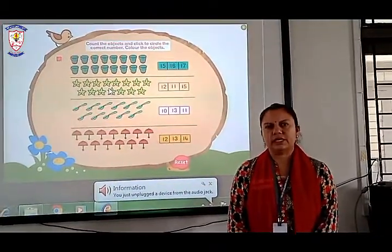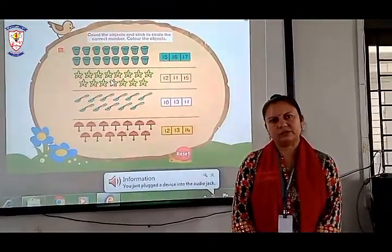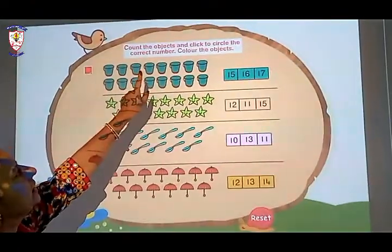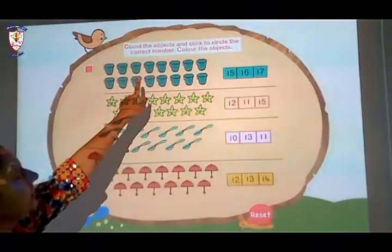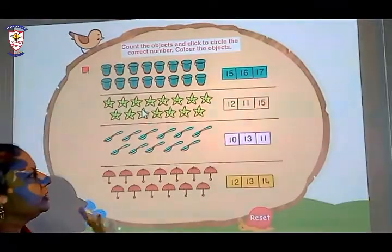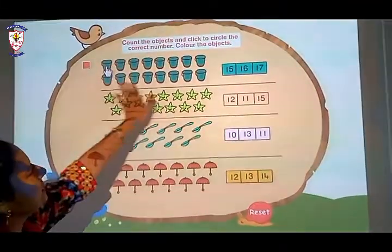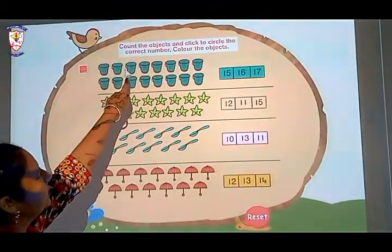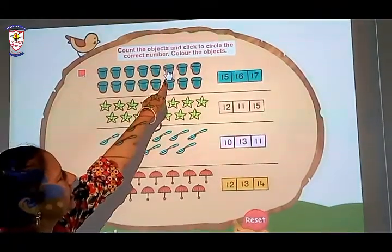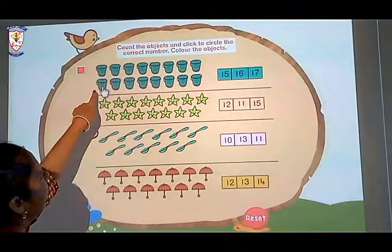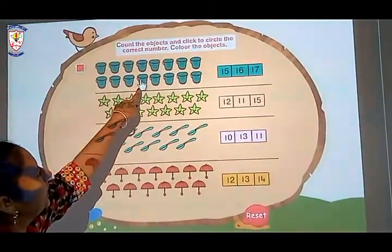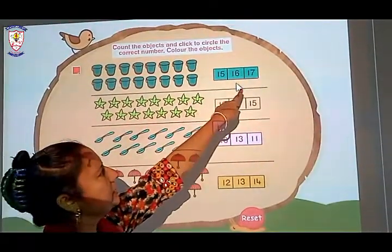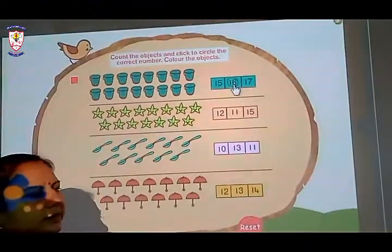Now let's do page number 190 from the season book. In this page, we have to count the objects and circle the correct number. At the last, we have to color the objects. What is the first one? These pictures are of buckets. Let's count how many buckets are there. 1, 2, 3, 4, 5, 6, 7, 8, 9, 10, 11, 12, 13, 14, 15, 16. So where is the number 16 written? Here it is. We have to circle that number.